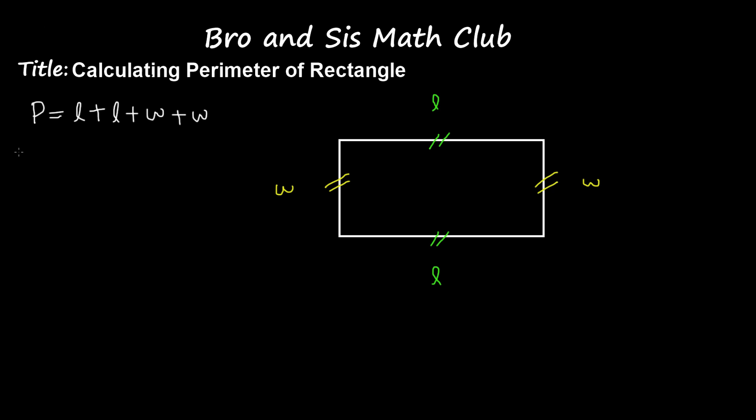Now another way you can do this is to combine both of the Ls, so P is equal to 2L, and then add that with both of the Ws, so plus 2W. And then to shorten this out, we can also say that P is equal to 2 times W plus L.